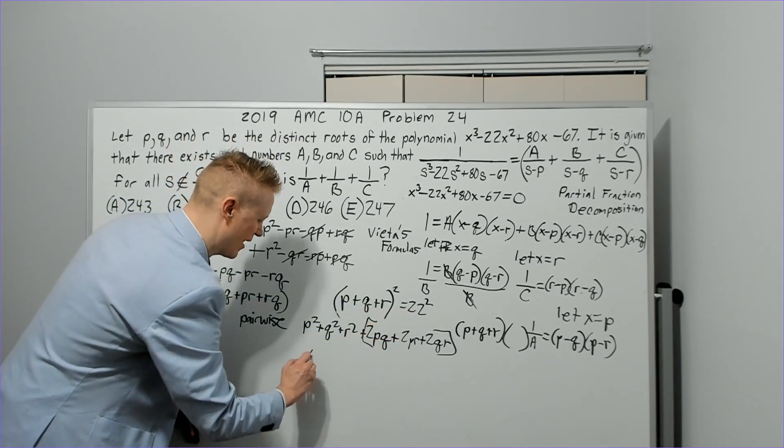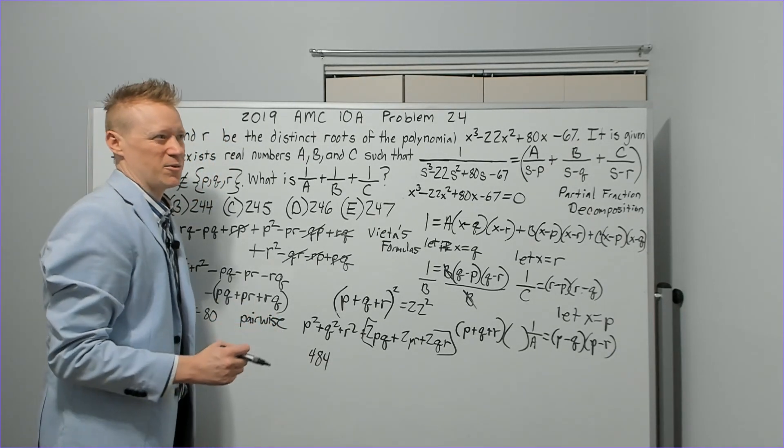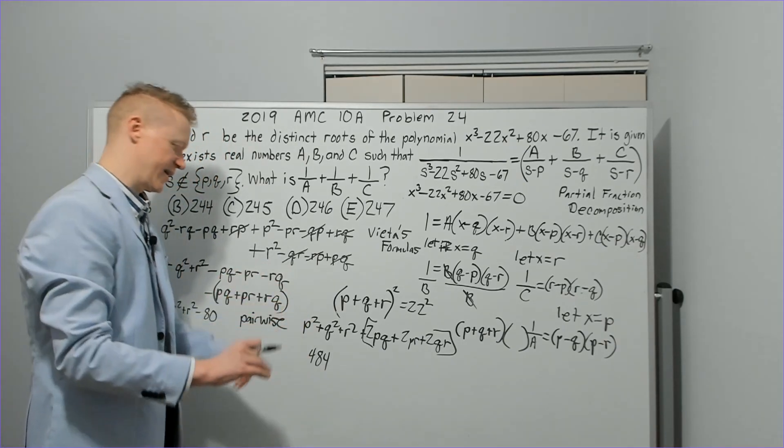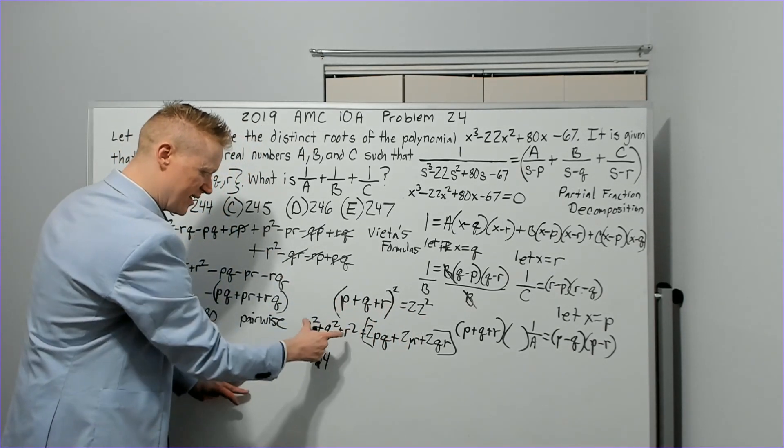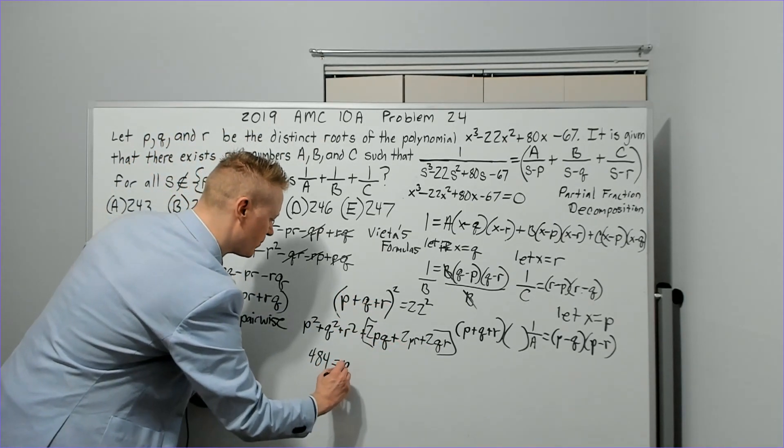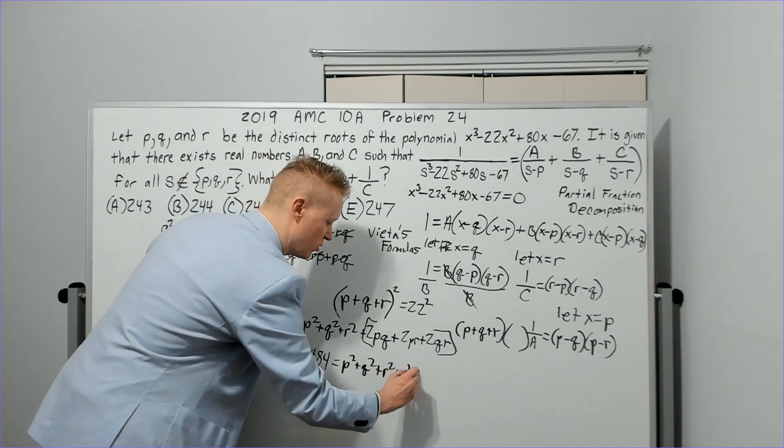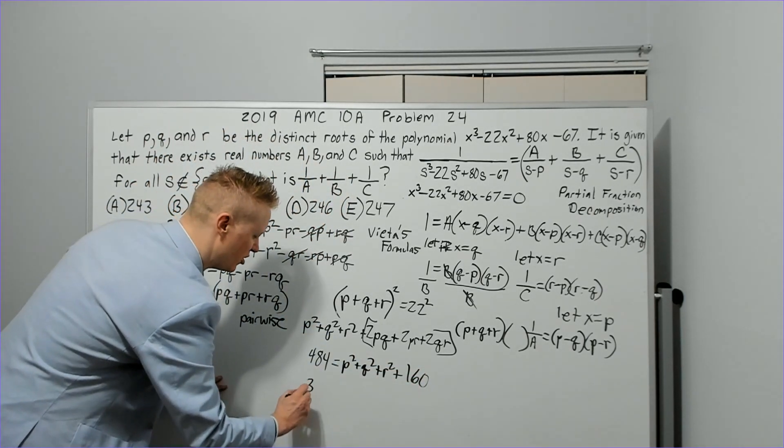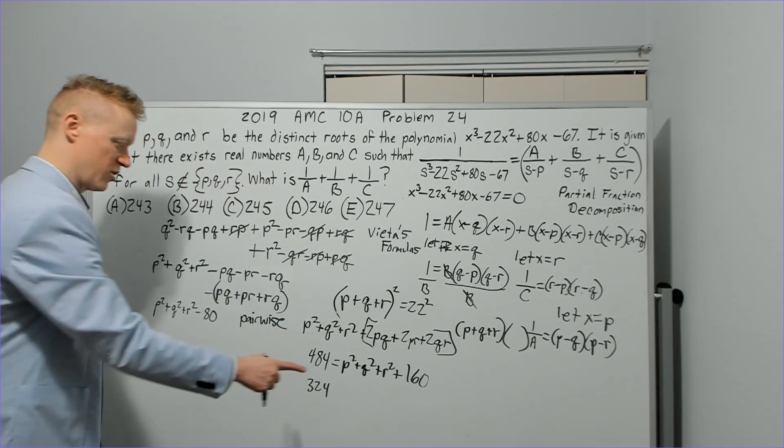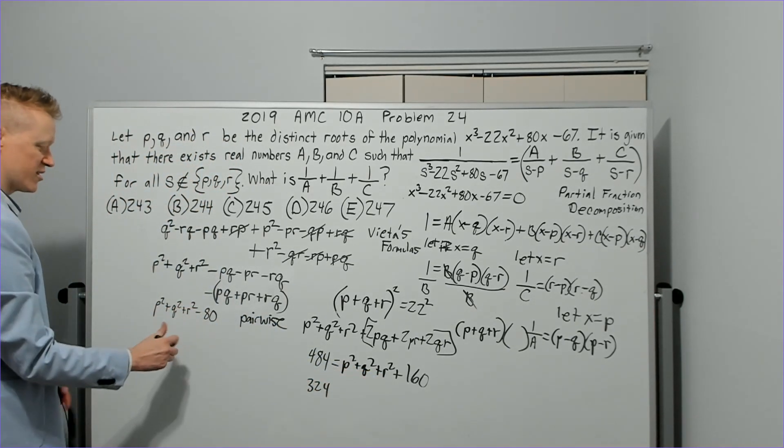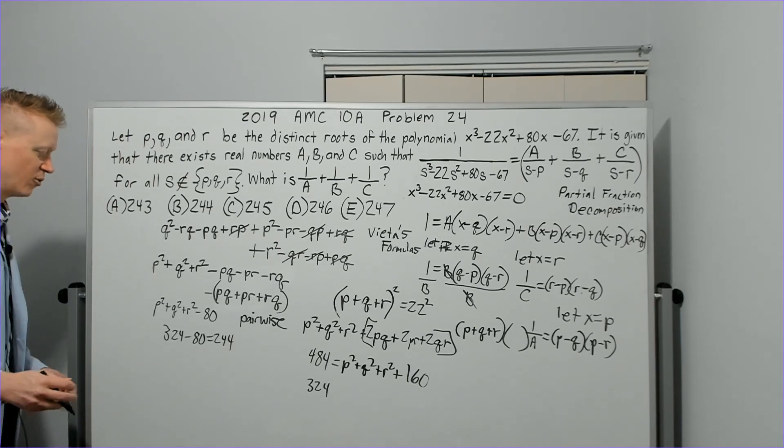So, then, we know what this is. This is 484. You should have your squares memorized from 1 to 30. I mean, you should. Sometimes, I'll forget one, like 23 squared is 529. But, usually, I have them all down. So, make sure you read it for the test so you can quickly calculate during the test. So, 484 equals this. And, this is written here. That is P squared plus Q squared plus R squared plus 2 times 80, which is 160. We now move the 160 over. You will get 324 is the sum of the squares of the roots. And, all we're going to do now is plug that value of 324 here. We will subtract 80, 324 minus 80 equals 244.